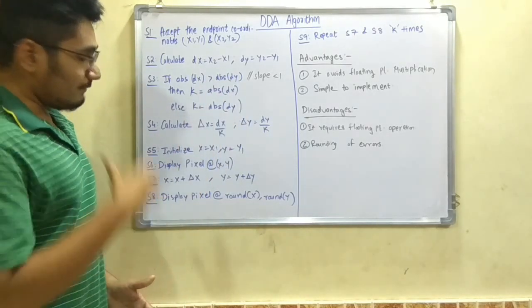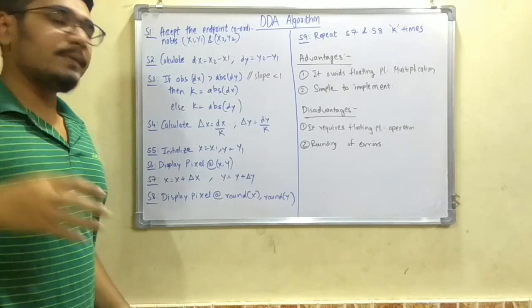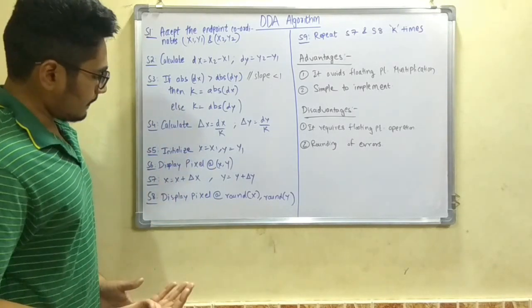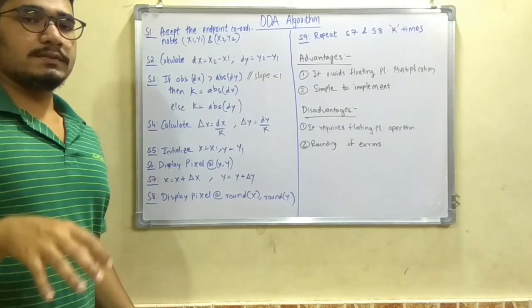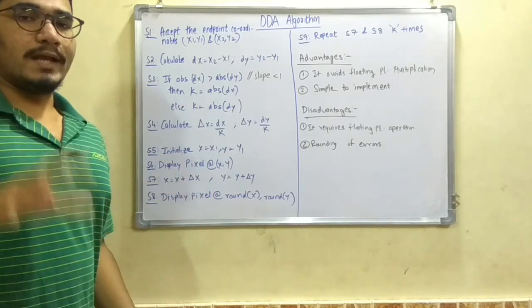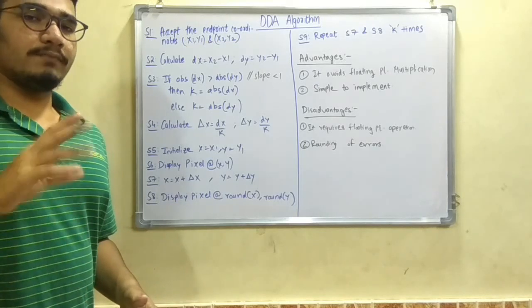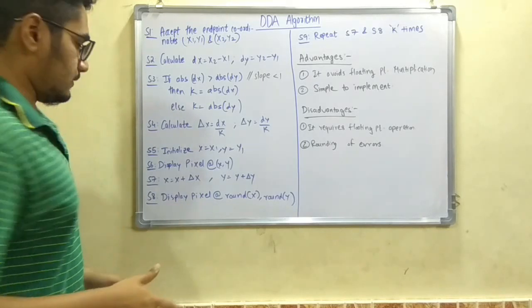Next, after we do that, we initialize or we update these points to x equals x1 and y equals y1. And after that when we do this, then we display the pixel at x, y, like in the graph we estimate or plot the points where these two points belong to in the x and the y axis.